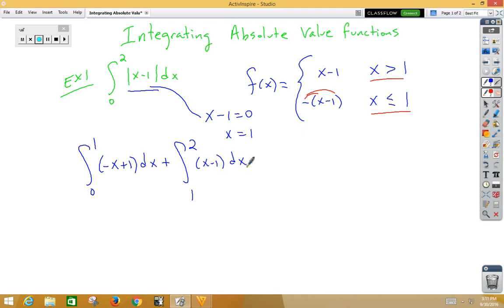Now I can integrate. The first one is negative x squared over 2 plus x from 0 to 1. If I plug in my 1, I'm going to get negative half plus 1 minus, if I plug in my 0, I just get 0, so my first part is 1 half.